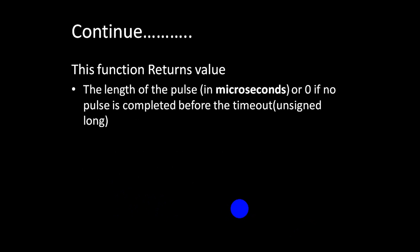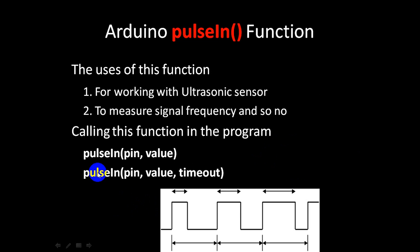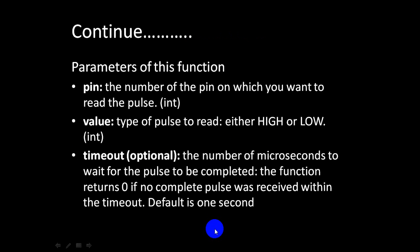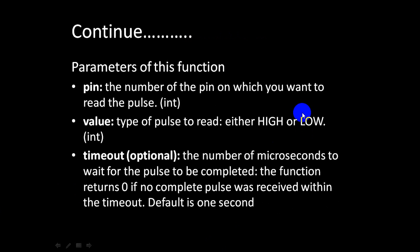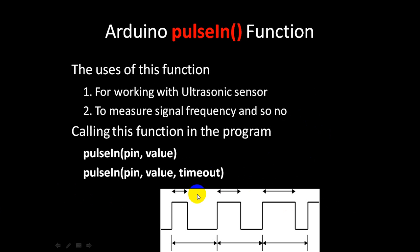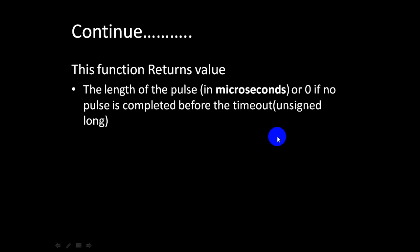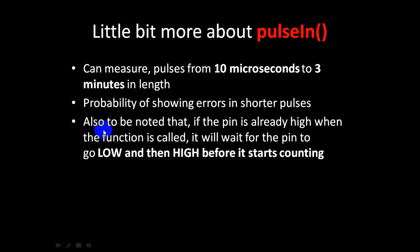The return value: if you use this function in your code, it will give you the time in microseconds - how many microseconds the signal is being ON or how many microseconds it is being OFF. The variable you should use to store this value should be an unsigned long variable.